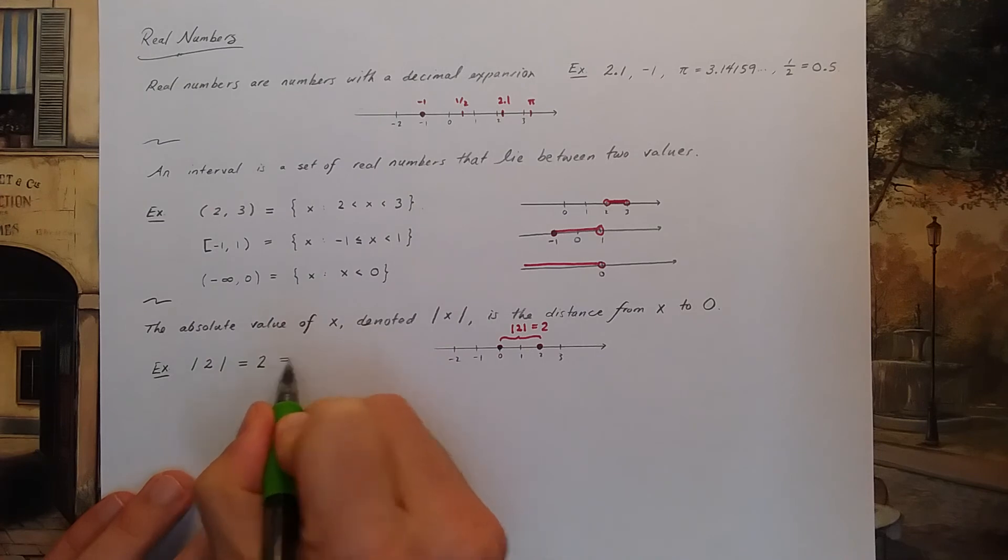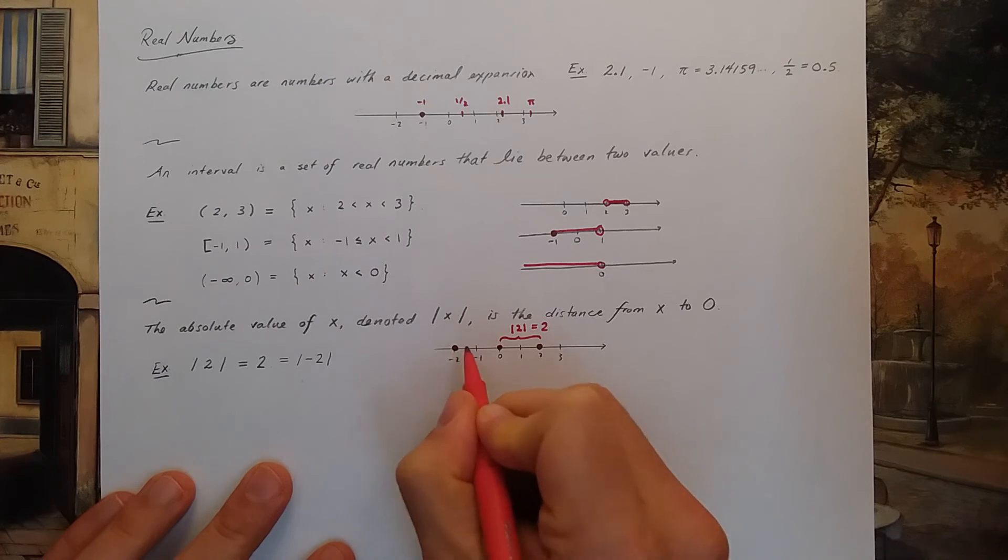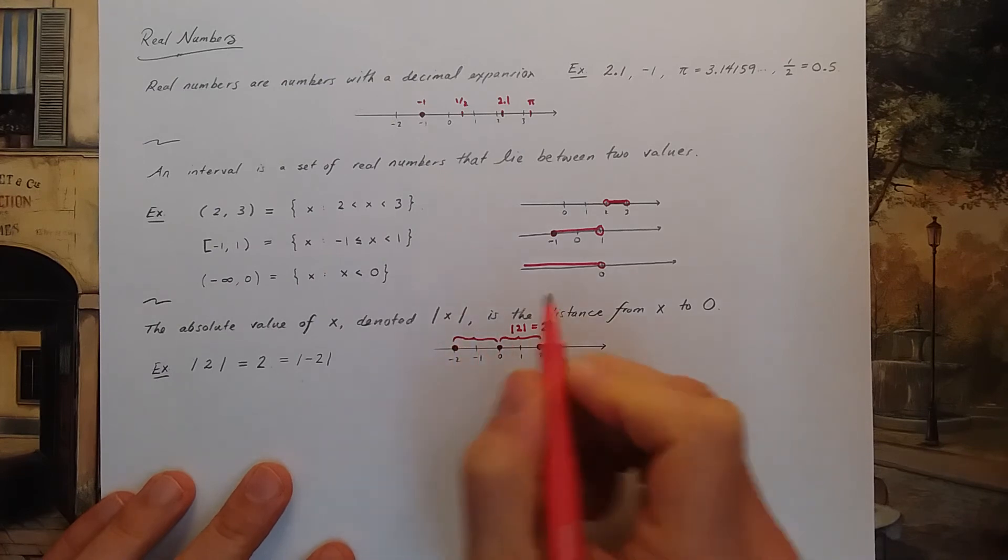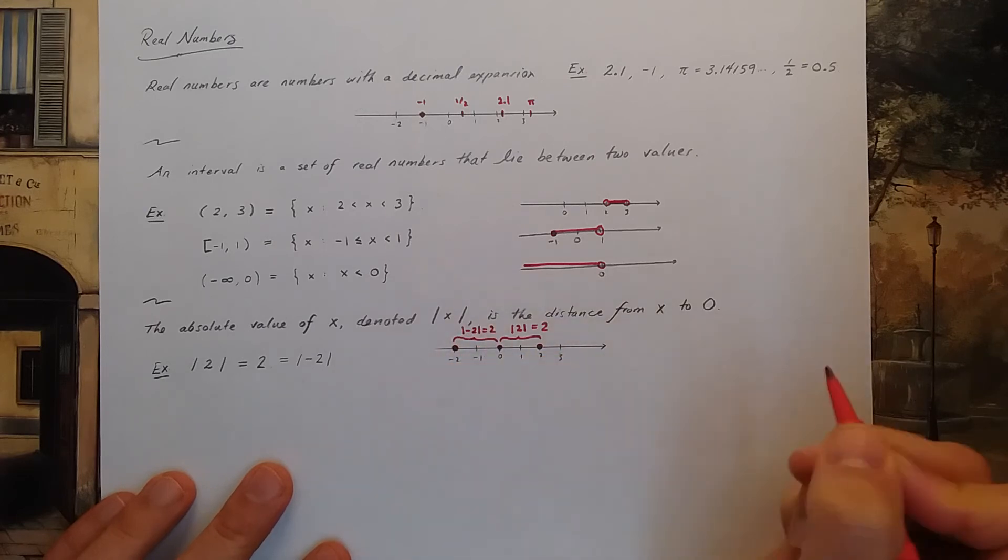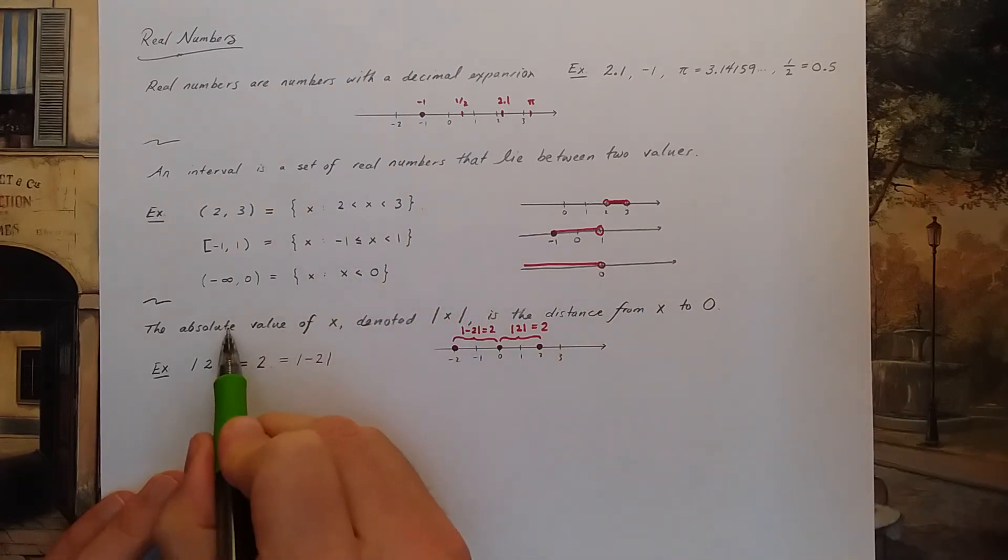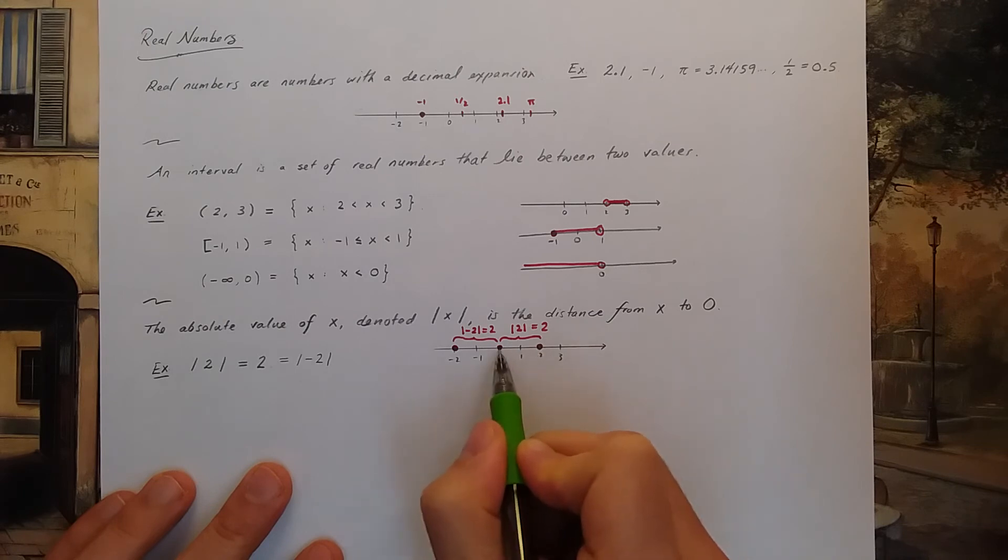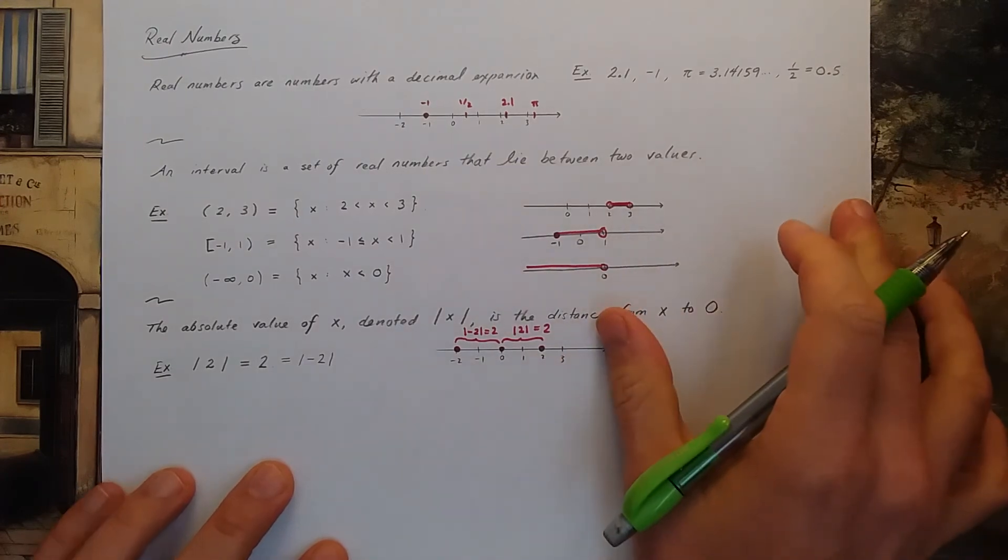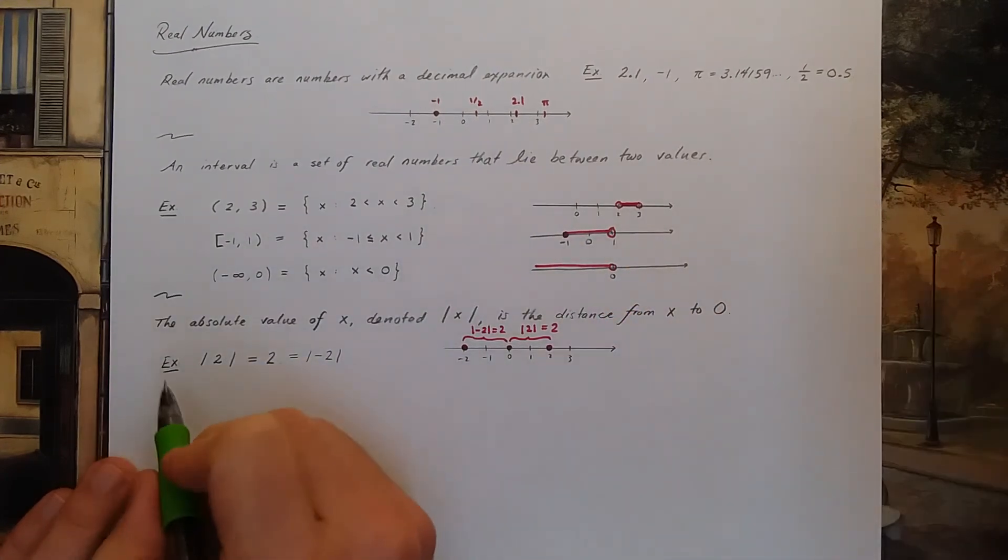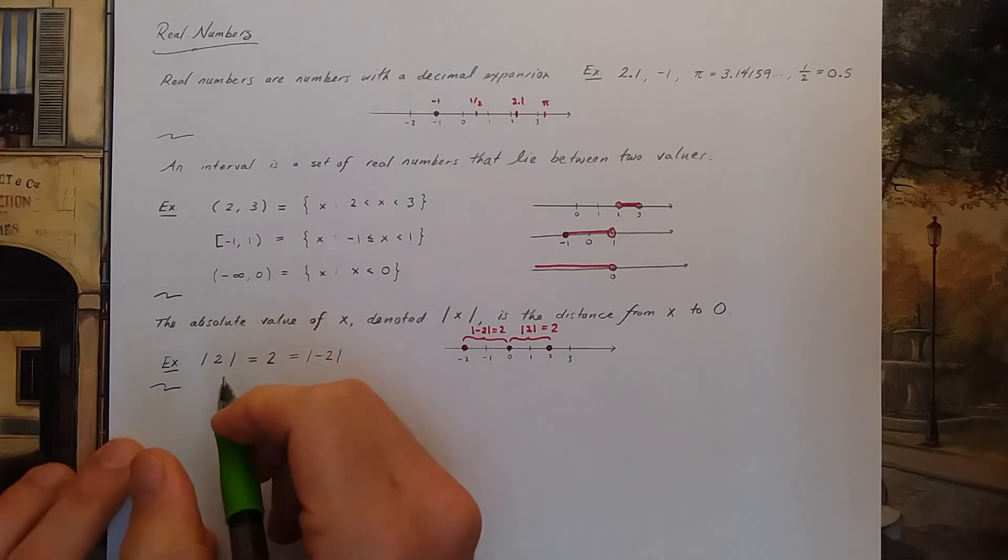This is also the absolute value of negative 2. Because if I'm over here at negative 2, this distance is also 2. So the absolute value of negative 2 is also 2. Again, when you see absolute value, think distance. How far am I away from 0? The distance can never be negative. That's why the absolute value of a number is always non-negative.